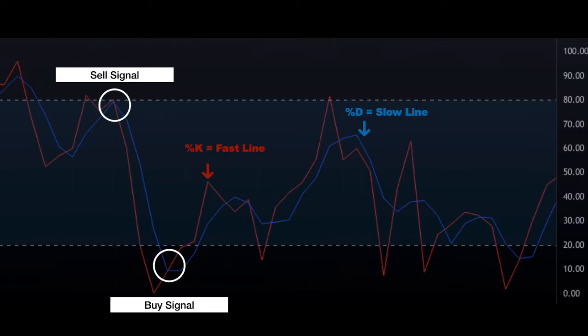The blue line is called %D, also known as the slow line, and is the one that allows you to generate buy or sell signals.